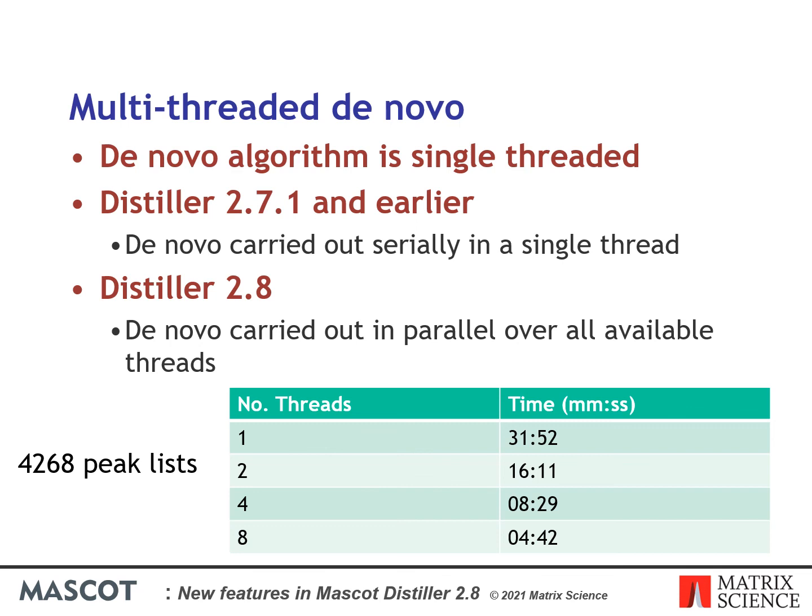As an example, here we have the timings for carrying out de novo on 4,268 peak lists from a dataset using 1, 2, 4, or 8 threads on a system with 8 real cores available. As you can see, each time we double the number of threads, we almost halve the processing time. Thank you for your attention.